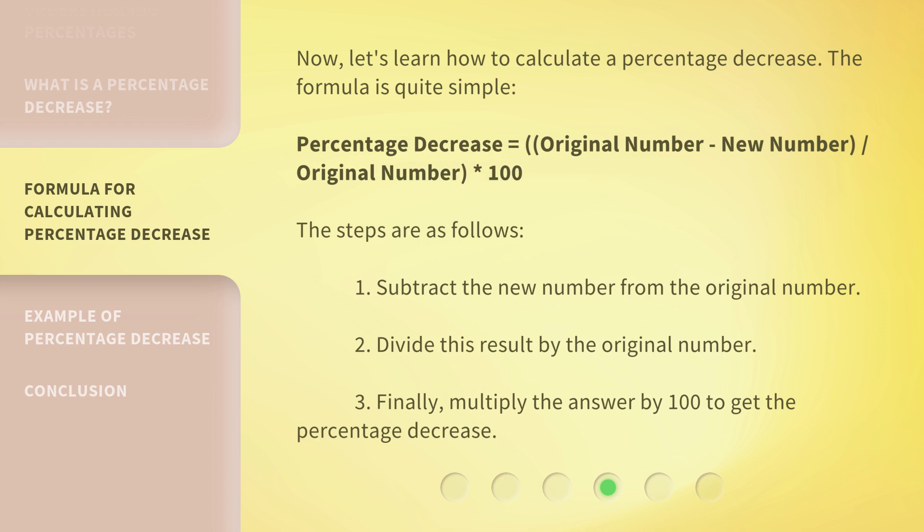The steps are as follows. 1. Subtract the new number from the original number. 2. Divide this result by the original number. 3. Finally, multiply the answer by 100 to get the percentage decrease.